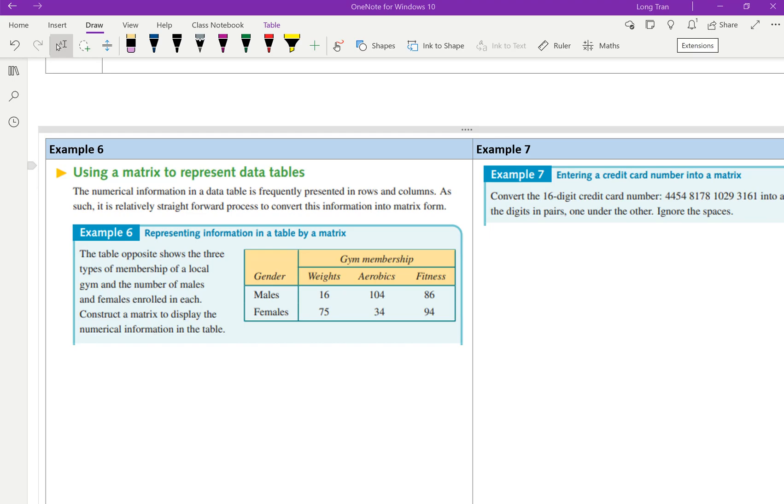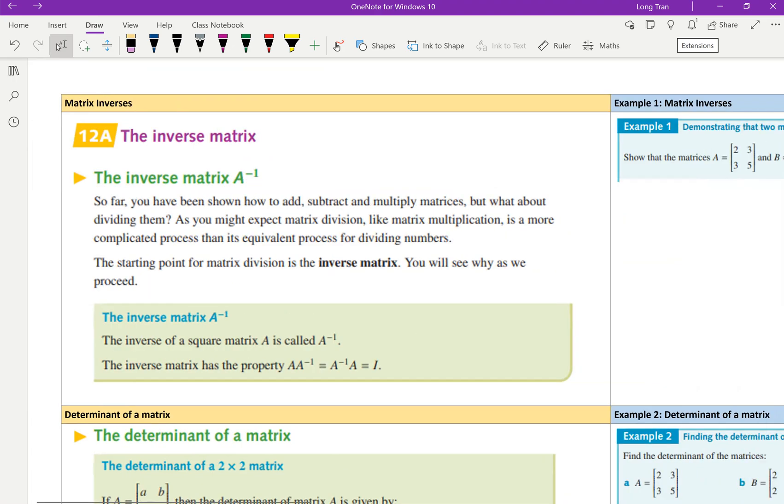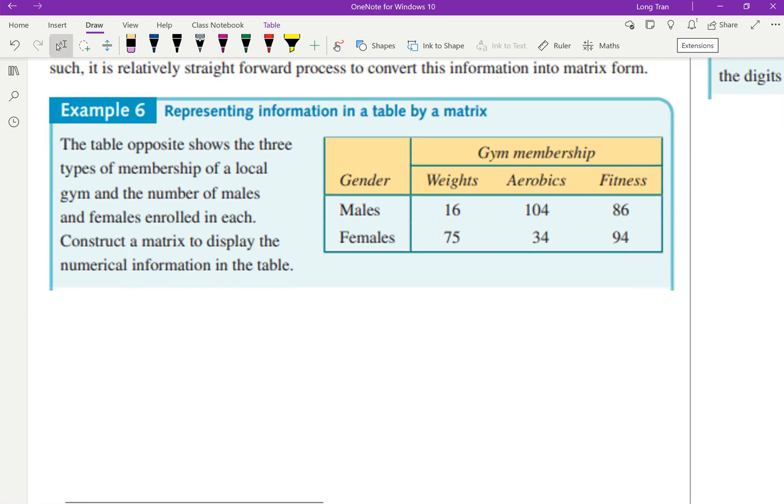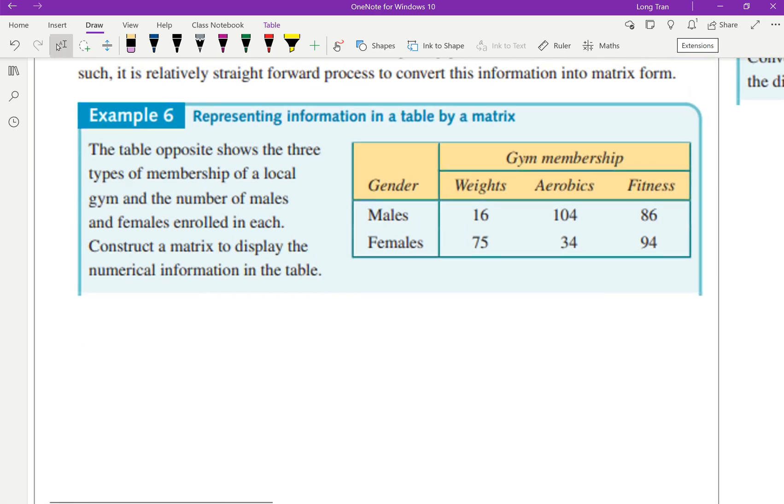If you have a look here, this is exercise 11B, one of these beginning exercises. They just want you to get familiar with how to represent matrices. So here in this table you've got a set of data - we can see that we've got weights, aerobics, fitness, males and females. Along the rows, rows represent the gender, and then columns represent the gym type of membership you have. When they say the table opposite shows the three types of membership of a local gym, construct a matrix to display this numerical information in the table.